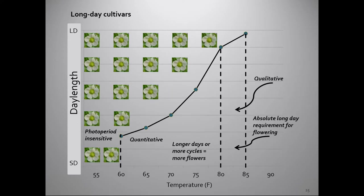In long-day cultivars, it's kind of just the opposite. As the temperature gets higher — as you notice with the black line with the green dots — as that temperature gets warmer and warmer, the day length requirement becomes longer and longer. The quantitative response occurs at a broader range: instead of 60 to 70°F as it did for short-day cultivars, you can go up to about 80°F and still get a quantitative response to photoperiod in terms of flowering. Qualitatively, the effect is seen between 80 and 85°F. Above around 85°F or so, long-day cultivars will shut down and stop flowering.